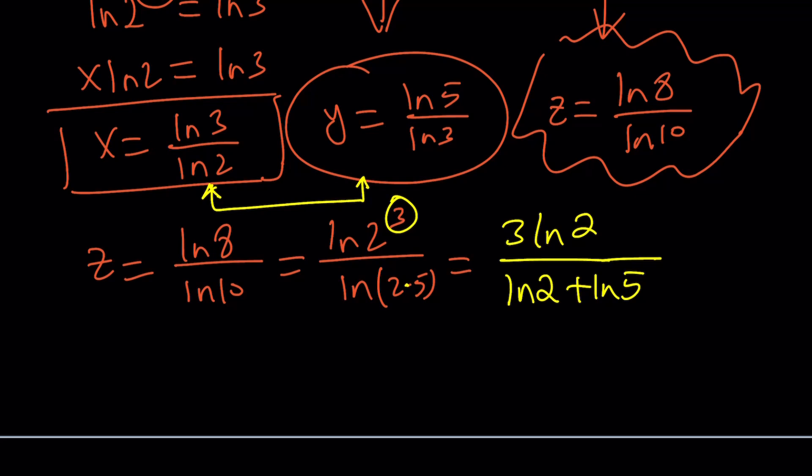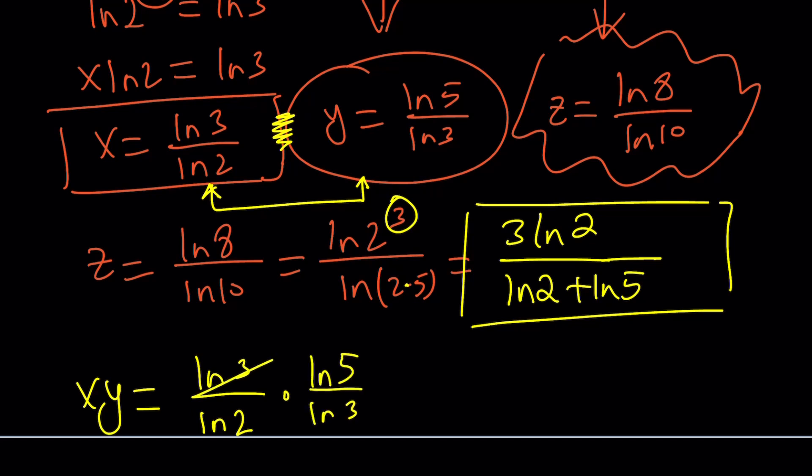We don't have any ln 3 here. So, let's go ahead and get rid of the ln 3. How can you get rid of the ln 3? You can solve for ln 3 and then set them equal to each other, or there's an easier way to do it. Just multiply x and y. You see, the motivation behind multiplying these two things is to get rid of ln 3. Because when you multiply x, y, you're going to get ln 3 over ln 2, multiply by ln 5 over ln 3, and ln 3 is going to cancel out. And we're going to end up with ln 5 over ln 2.